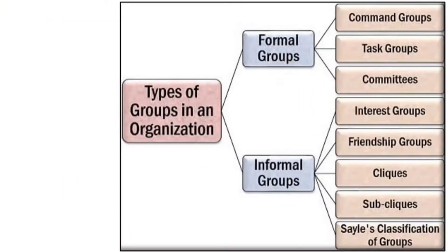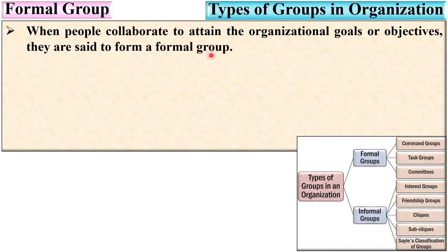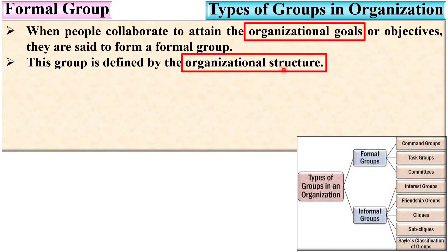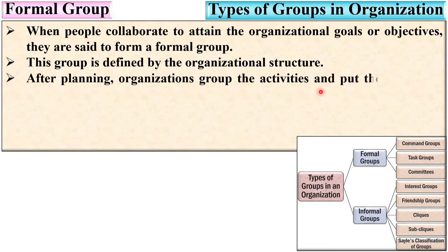Let us start with the first one: formal group. When people collaborate to attain the organizational goals or objectives, they are said to form a formal group. This group is defined by the organizational structure, because the people collaborate to attain the organizational goals.